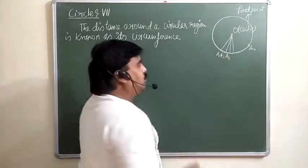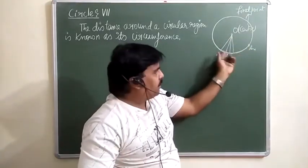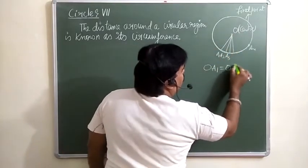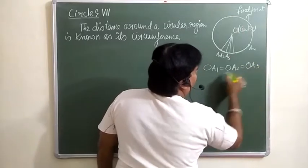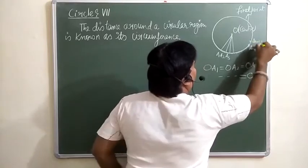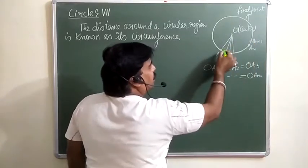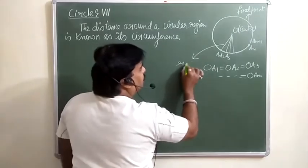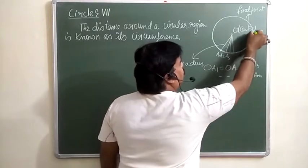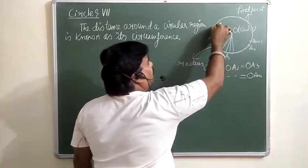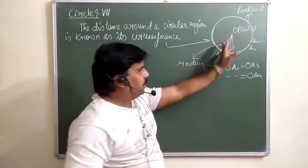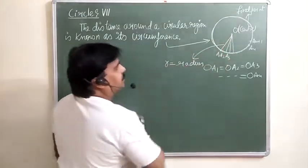The points which are equidistant from the fixed point — you can say OA1 = OA2 = OA3, and all these distances are equal. This equal distance is known as the radius of the circle, denoted by R. The path formed by these points is known as the circumference.